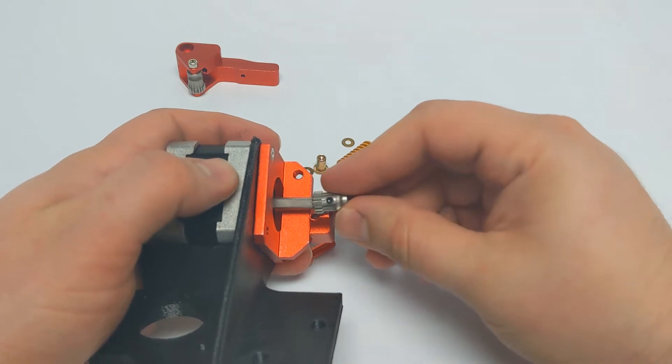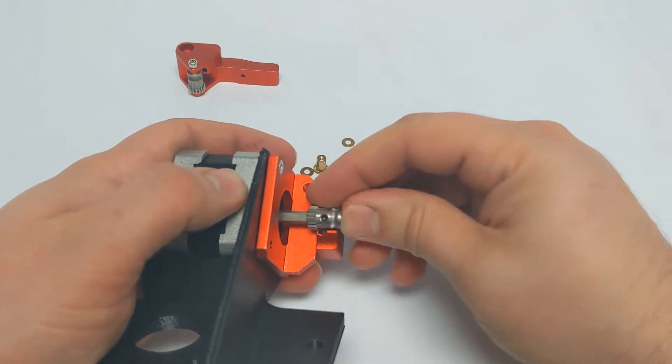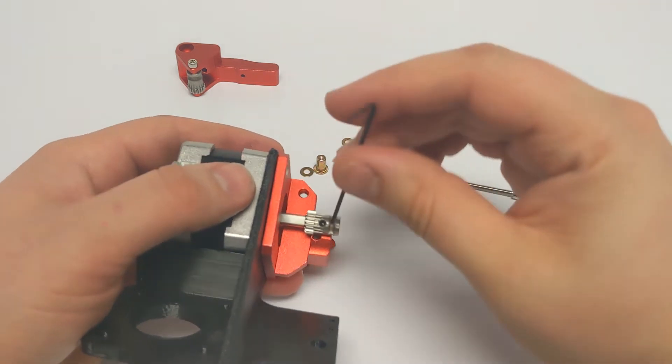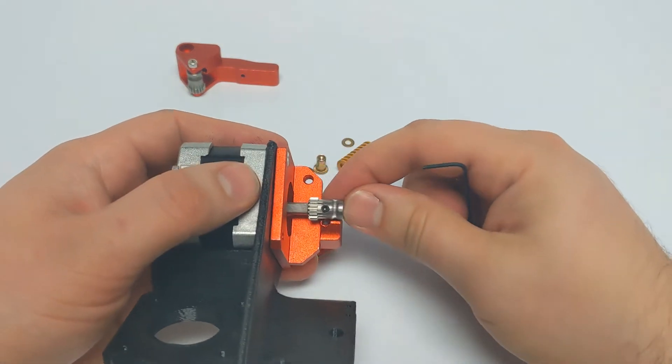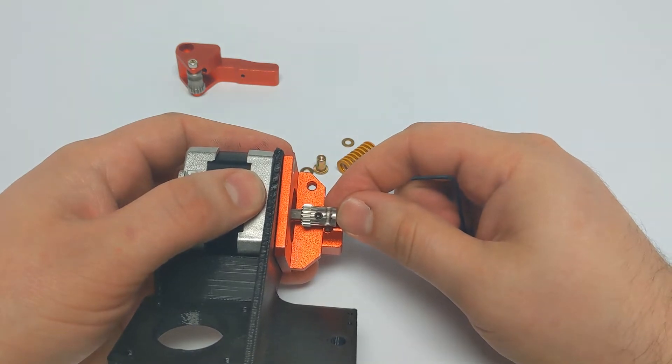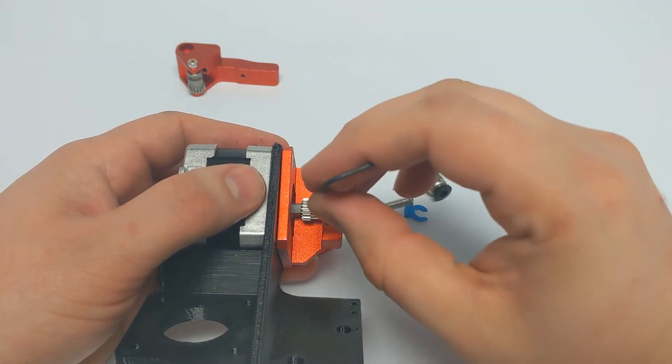Attach the drive gear to the stepper motor and make sure that the drive teeth are in alignment with the filament outlet hole. You're also going to want to make sure the grub screw is positioned to make contact with the flat part of the motor shaft.